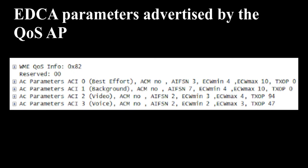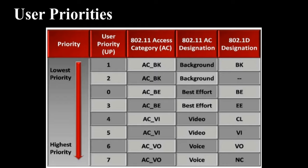EDCA parameters advertised by the QoS access point. The snippet from an air trace shows the EDCA parameters from the WMM information element in the beacon of a QoS access point. List of user priorities in EDCA.